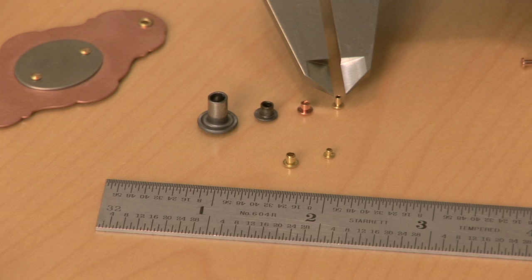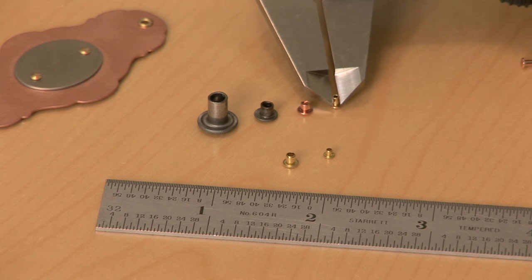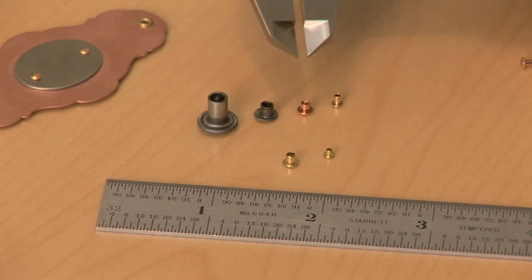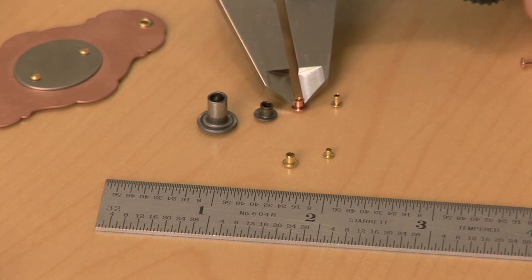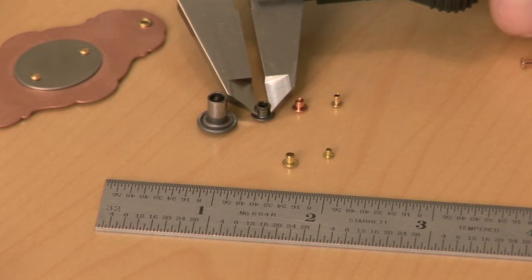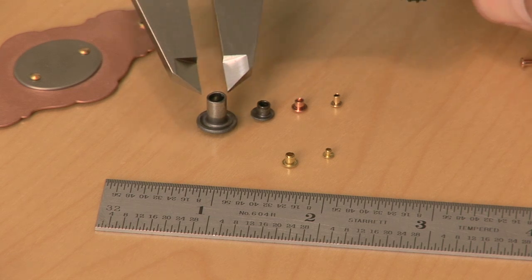That's why this 1/16th diameter rivet measures just under 1/16th of an inch. The same is true for this 3/32nd diameter rivet, for this 1/8th diameter rivet, and for this 3/16th diameter rivet.